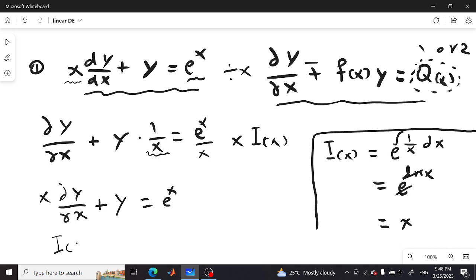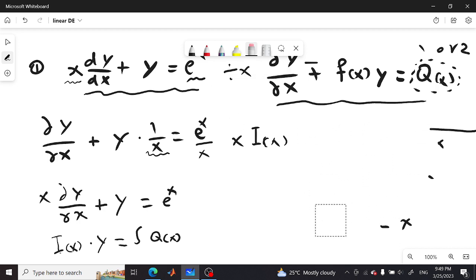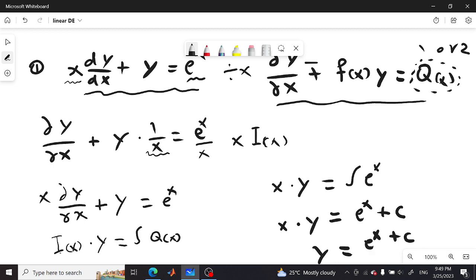So the final answer would be x times y equals the integral of e^x. So the final answer would be e^x plus C. And here we have x times y, so y equals (e^x + C)/x, and that's our final solution. Thank you for watching.